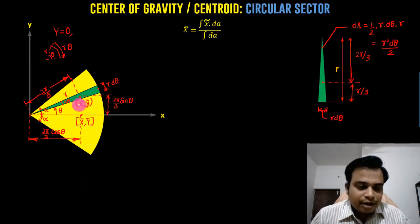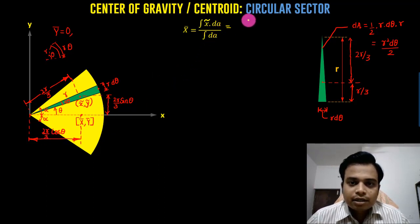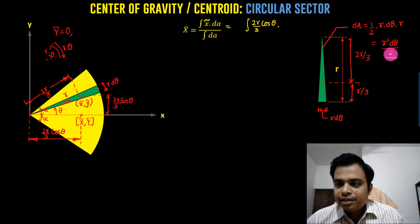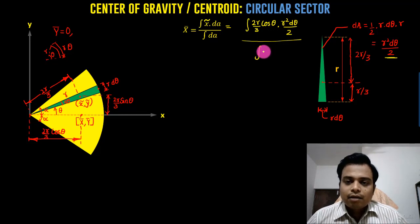So now let me put in the value of x tilde that we've got, which is 2r over 3 cos theta. Let me put an integration sign. We're going to put the limits also. 2r over 3 cos theta. The next thing that we have is dA, which is r squared dθ over 2, and again we have dA with an integral sign. This is going to be again r squared dθ over 2.